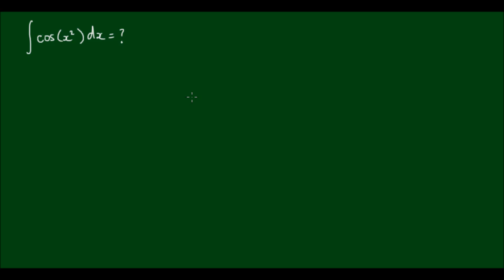It has quite a lot of applications in optics, and it's closely related to the error function. There's a version for cos and there's a version for sin. The Fresnel function for cos is simply written as C(x) equal to the integral from 0 to x of cos(t²) dT.